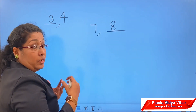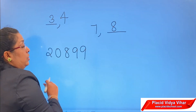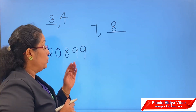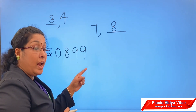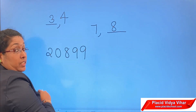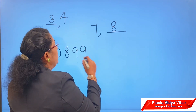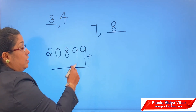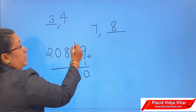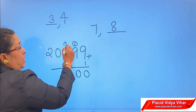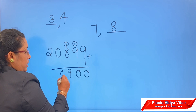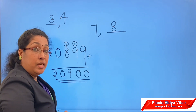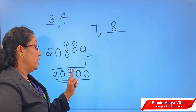Now let us look at a large number. What is the successor of 20,899? To find the successor, we add 1. So 20,899 plus 1: 9 plus 1 is 10, carry over; 9 plus 1 is 10, carry over; 8 plus 1 becomes 9. So the successor of 20,899 is 20,900.